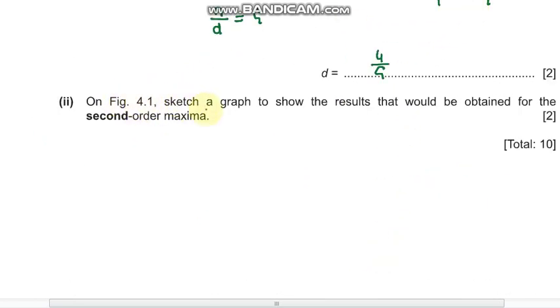It says on figure 4.1, sketch a graph to show the results that would be obtained for the second-order maxima. For the gradient, we have already found the expression n = gd.